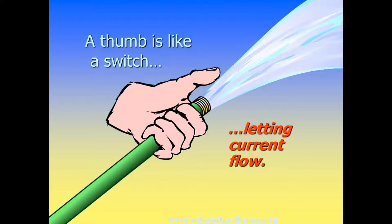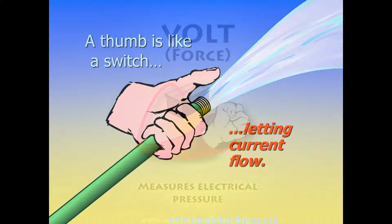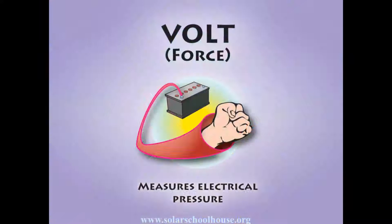When you let go, you let the current of water flow, just like flipping a switch lets electricity flow in a circuit. Voltage is measured in volts. Volts measure electrical pressure.